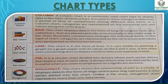Now let's look at chart types. First is the column chart. A column chart is a commonly used chart type that displays data in the form of vertical bars. It is used to show change in data over a period of time or comparison among different data items. Categories are represented on the horizontal axis and values along the vertical axis.